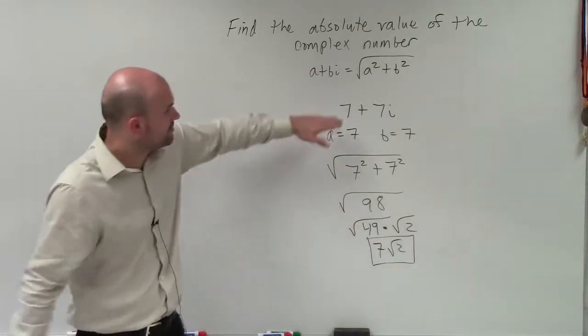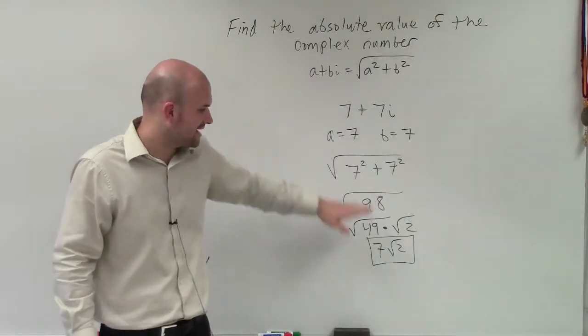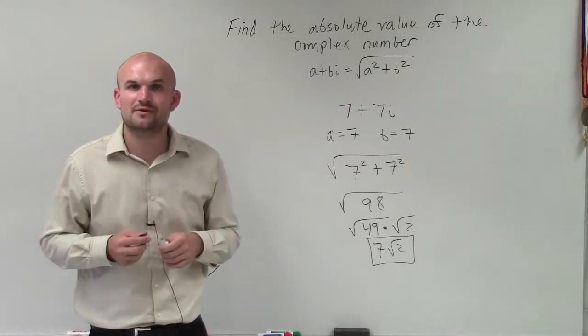So therefore, my absolute value of my complex number, 7 plus 7i is going to be 7 times the square root of 2. Thanks.